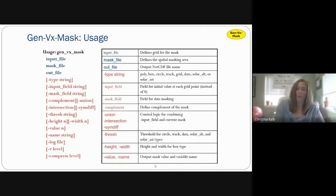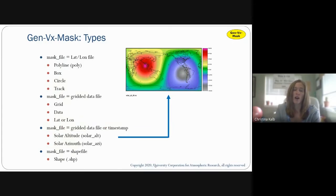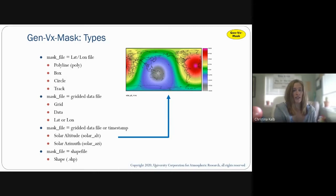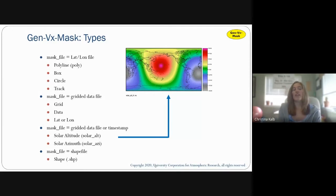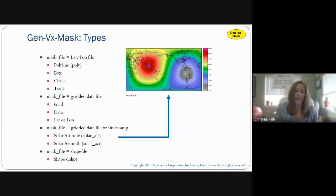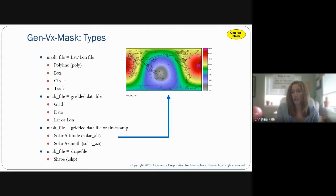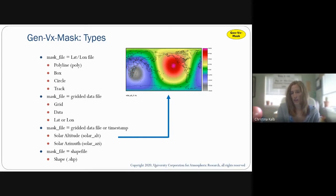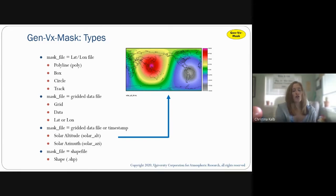There are many different mask types, and they take different input mask files. If you input a latlon file — a listing of latlon points — you can get a polyline, poly region, box, circle, or track output. If you input a gridded data file, you can get a latlon mask, data mask, or grid mask. You can also input a gridded data file or a timestamp to get a solar altitude or solar azimuth, showing how the solar azimuth changes over time. You can also input a shape file.